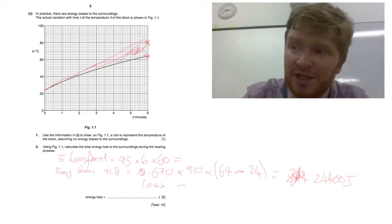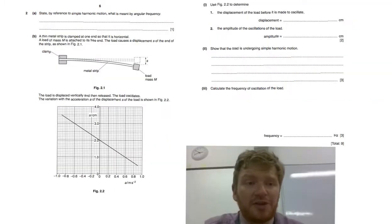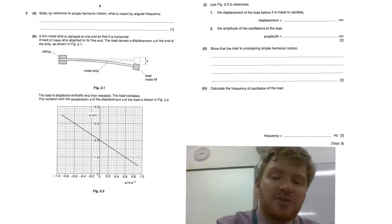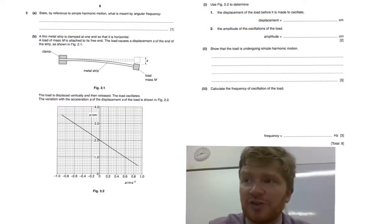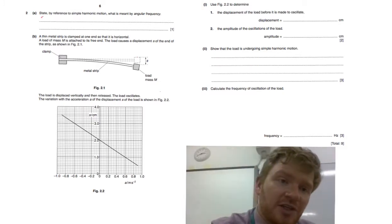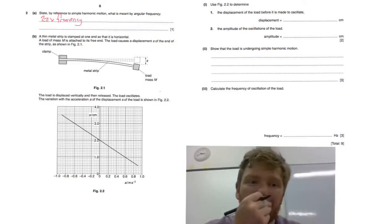So here we are, the nice old SHM question. So, starting off with a definition. State for simple harmonic motion, what is meant by angular frequency. So angular frequency, this is another one that's in your list of definitions that you just have to know. Angular frequency is 2π multiplied by frequency. That's just the definition.